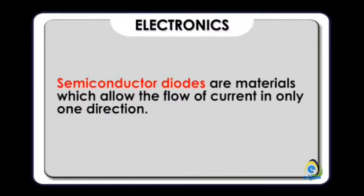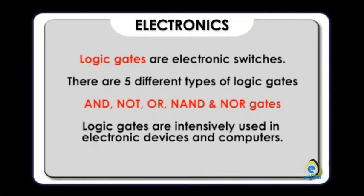Semiconductor diodes are materials which allow the flow of current in only one direction. Logic gates are electronic switches. There are five different types of logic gates: AND, NOT, OR, NAND, and NOR gates. Logic gates are intensively used in electronic devices and computers.